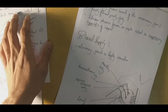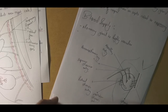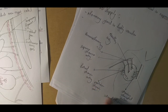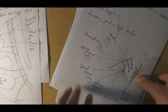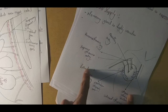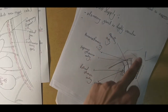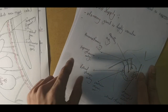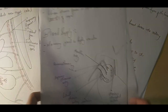The blood supply of the mammary gland is provided by the acromiothracic artery, superior thoracic artery, lateral thoracic artery, posterior intercostal arteries, and internal thoracic artery. The internal thoracic artery passes medially, the posterior intercostal arteries from the posterior, and the lateral thoracic artery from the lateral side. These arteries arise from the axillary artery.